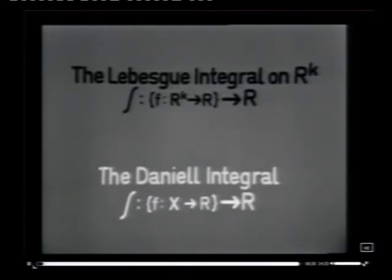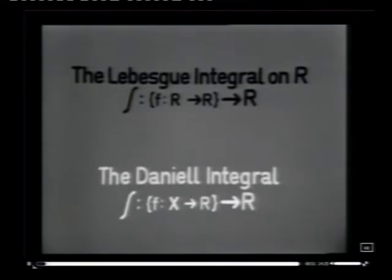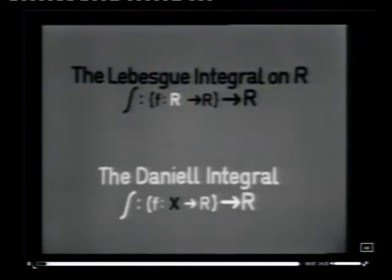Before I start on this, I want you to do some work. I'm going to show you our usual animation of the four-stage Lebesgue definition, taking K equal 1 for simplicity. And for each stage, I want you to think carefully about how we could replace the real line by a completely arbitrary set X.